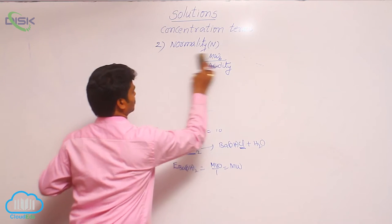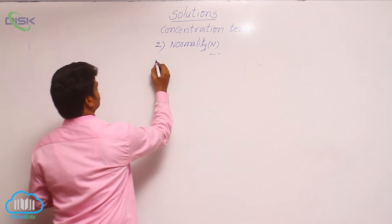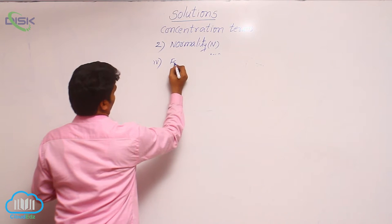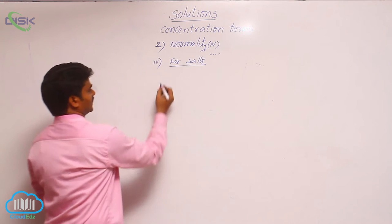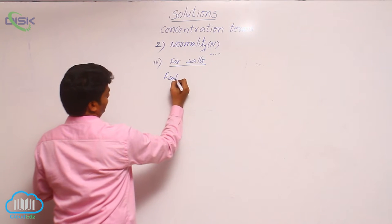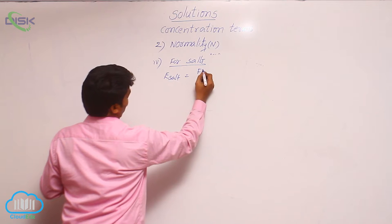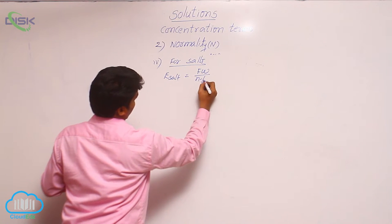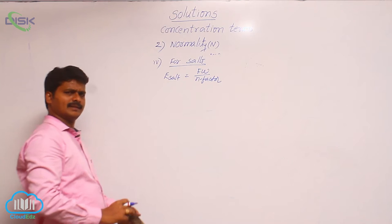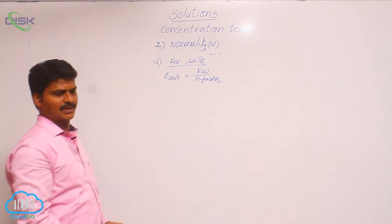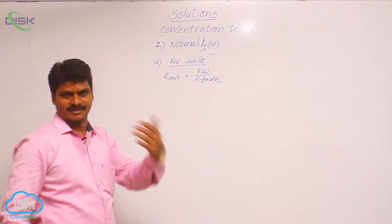Now, the fourth substance: for salts, how to find out equivalent weight. Equivalent weight of a salt equals its formula weight divided by n-factor. Formula weight is just like molecular weight. We use the term molecular weight for molecular substances like H2SO4, glucose, methane, NaOH. But NaCl, sodium nitrate, barium chloride are not molecular substances — they are ionic compounds, and for ions or ionic compounds we use the term formula weight.